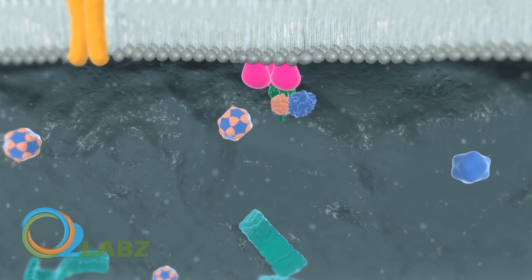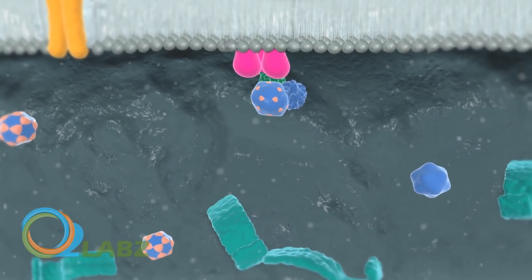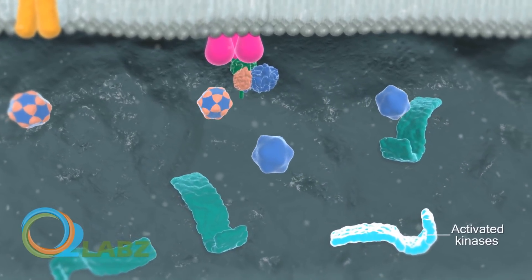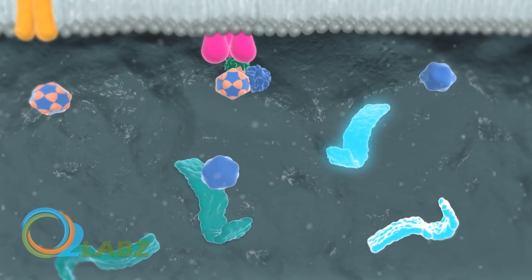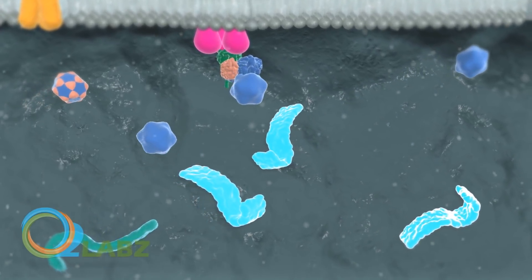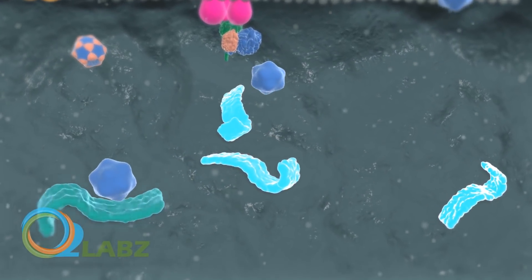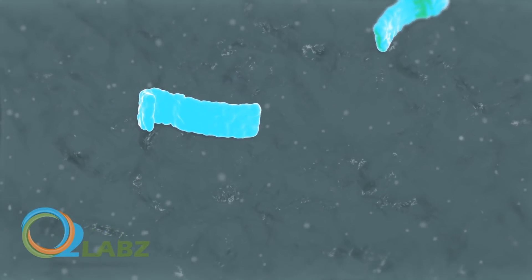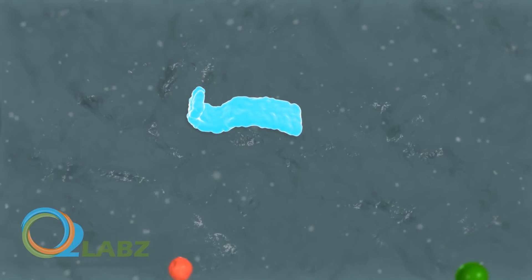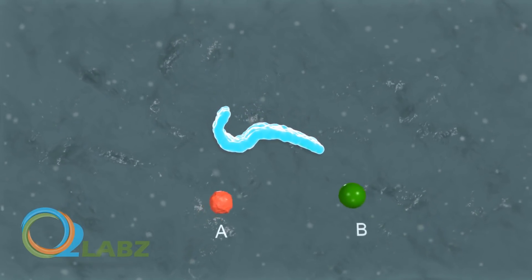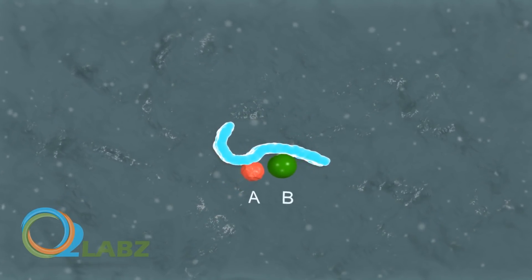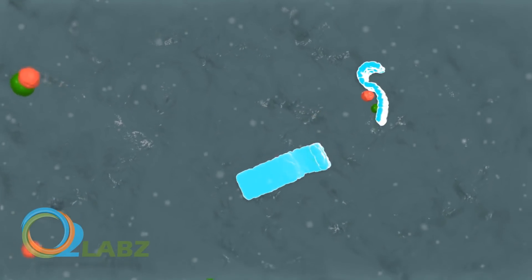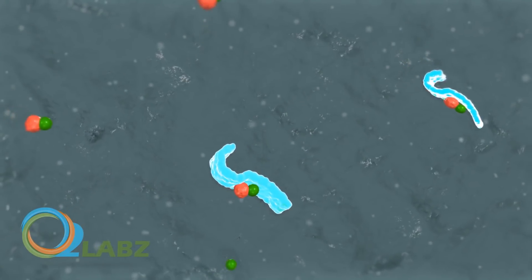Cyclic AMP acts to activate pre-existing cellular enzymes known as kinases. In a cascade of events, these enzymes either activate or inhibit other cellular proteins. While the action of the second messenger cyclic AMP is short-lived, the net result of the hormone signaling is an alteration of the target cell's physiological response. Even though the mechanism of action is different in water-soluble hormones, the range of physiological responses can be similar to those found in steroid hormones.